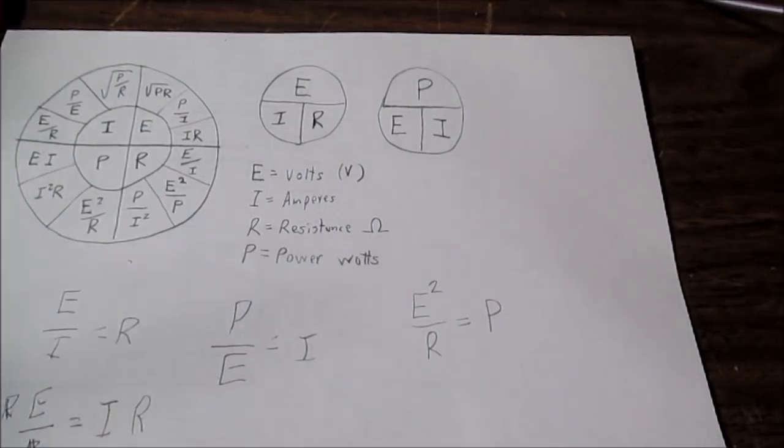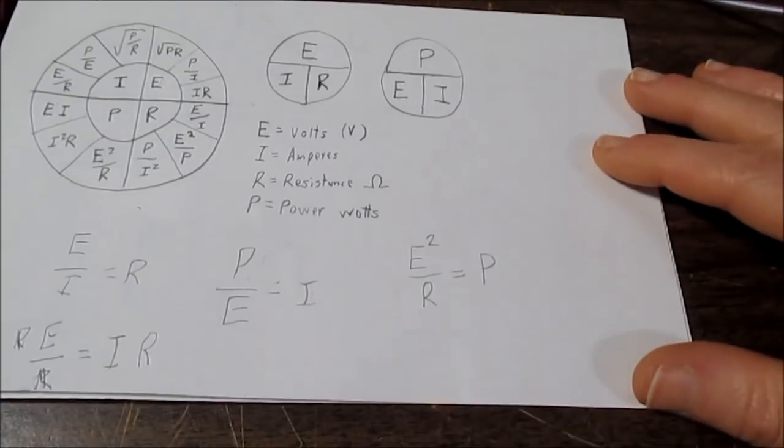Okay, so now that we have half the chart down, what about the rest of it? Well, we have to deal with those pesky squares and square roots. But, it's pretty easy as well.